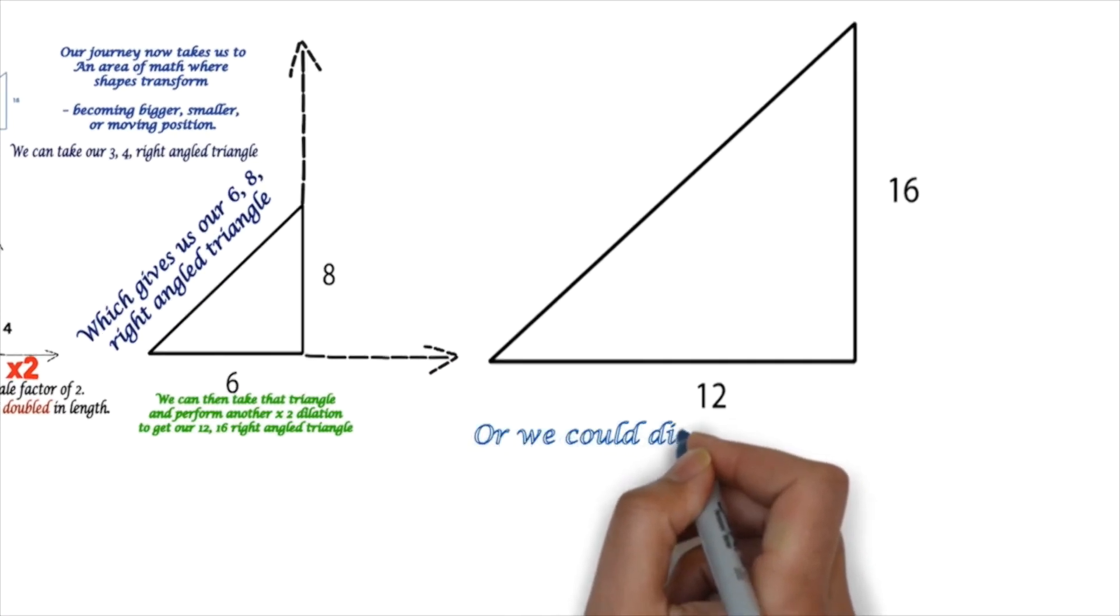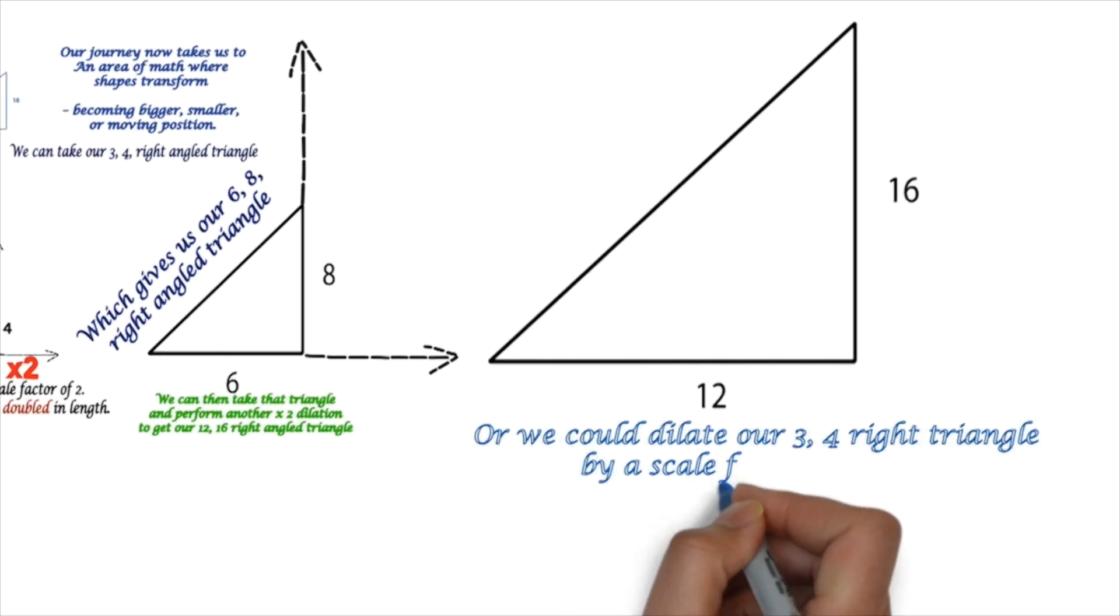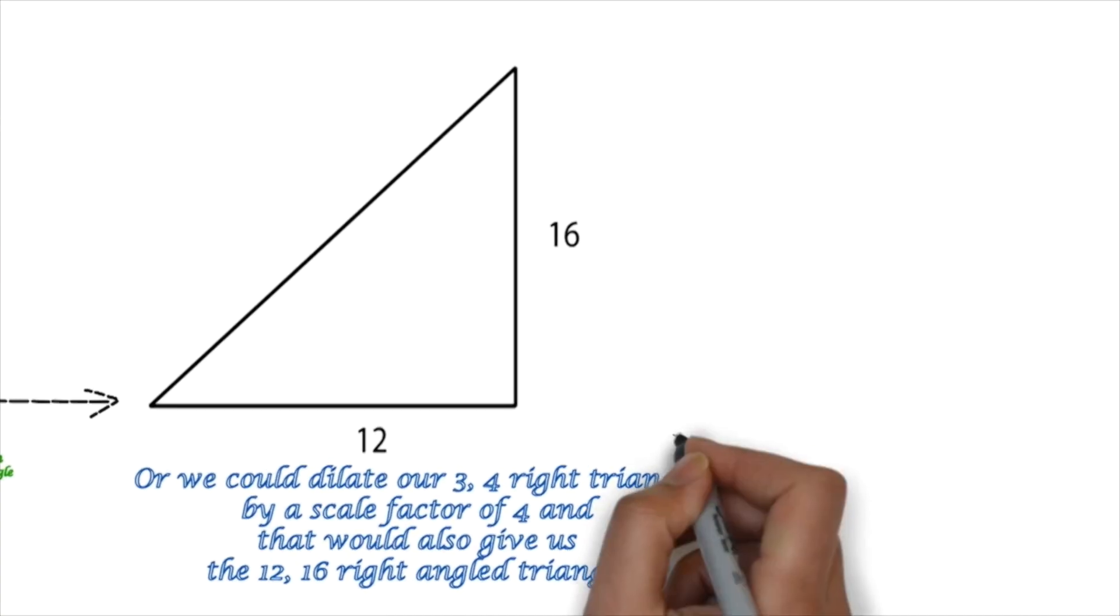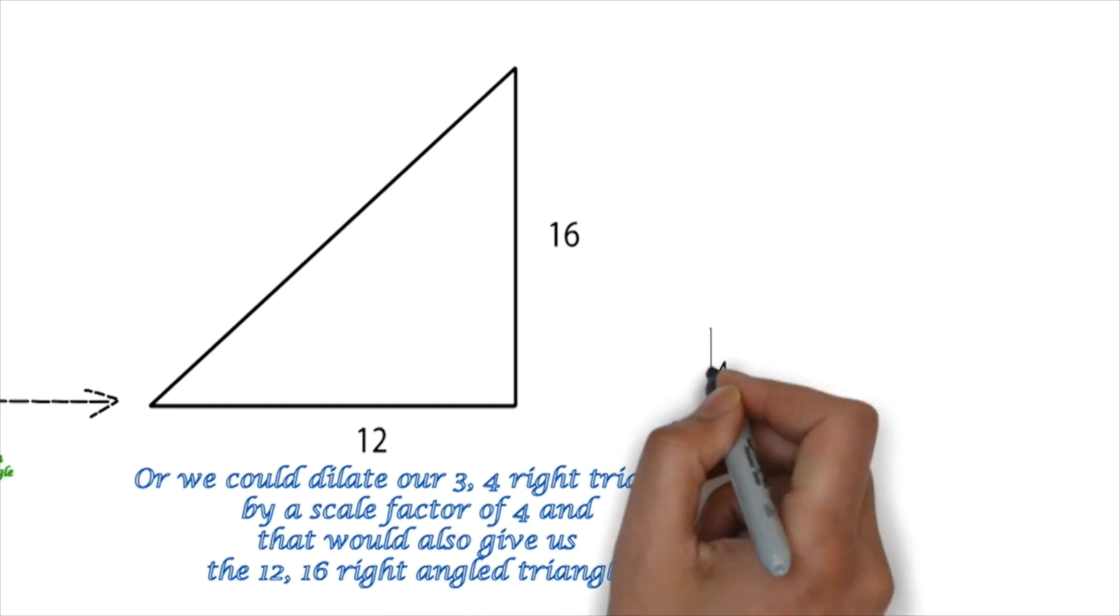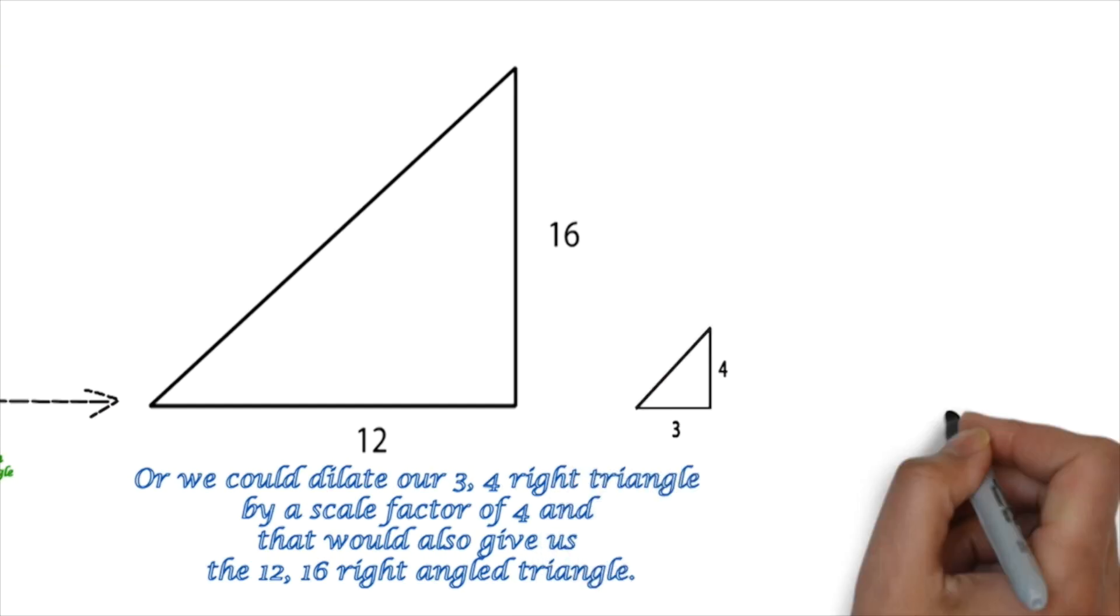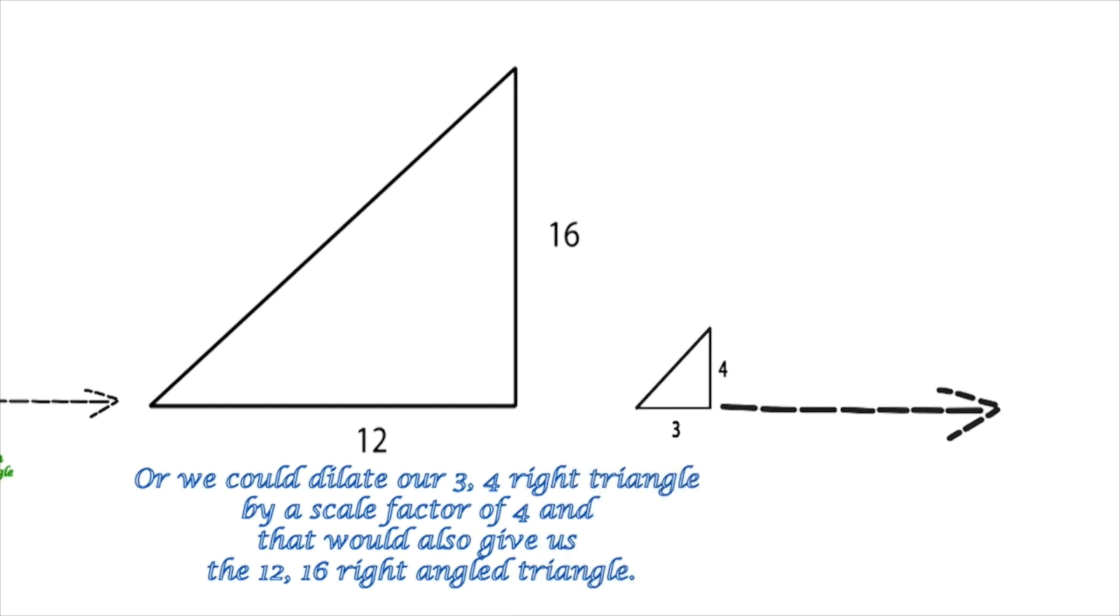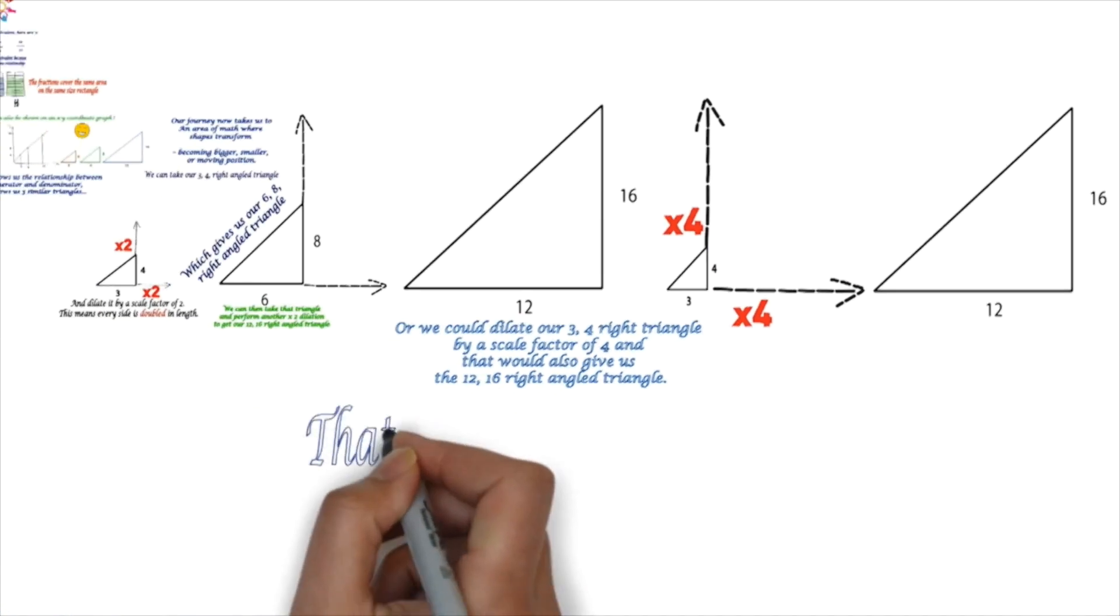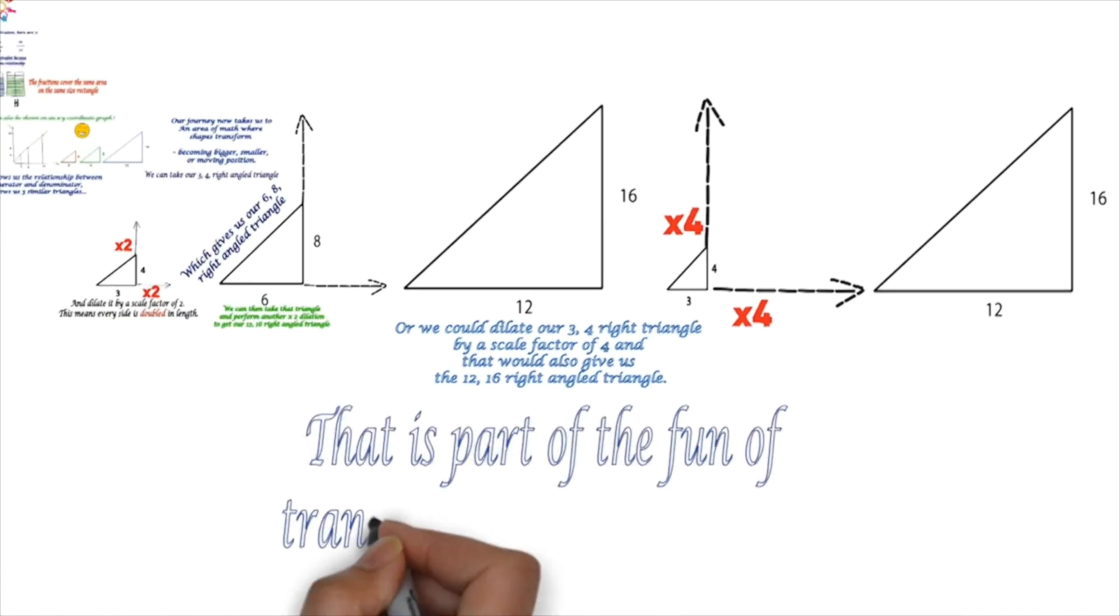Or we could have dilated our 3-4 right triangle by a scale factor of 4, and that would also give us the 12-16 right-angled triangle. We'll show you that. That's part of the fun of transformational geometry.